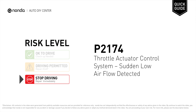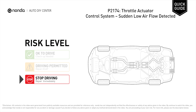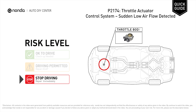P2174 is a Diagnostic Trouble Code for Throttle Actuator Control System Sudden Low Airflow Detected. Under this circumstance, stop driving and repair your vehicle immediately. It means that a certain amount of airflow was suddenly inducted into the Throttle Actuator Control System.